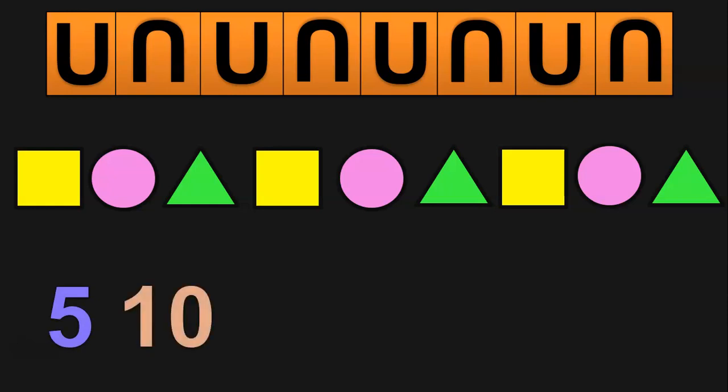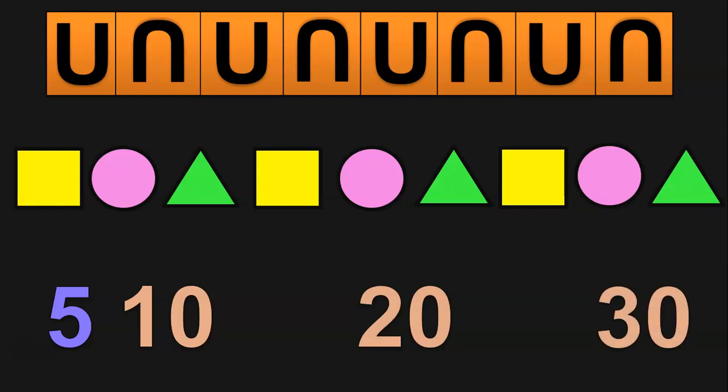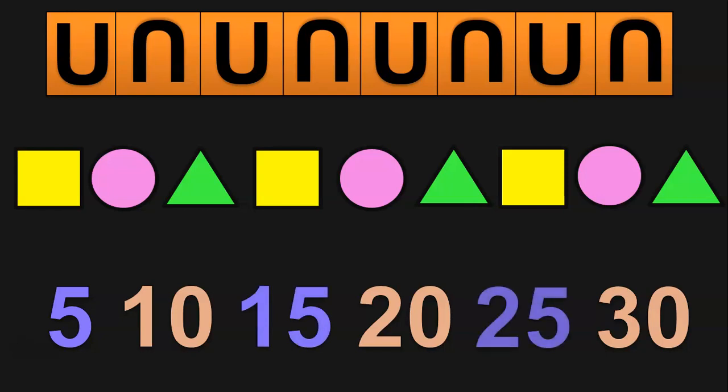5, 10, blank, 20, blank, 30. Fill in the blanks and complete the pattern. You will get 5, 10, 15, 20, 25, 30. Here we are skip counting by 5 and doing a pattern with numbers.